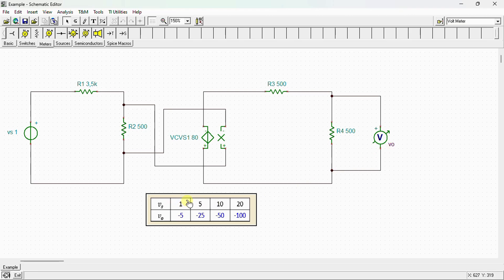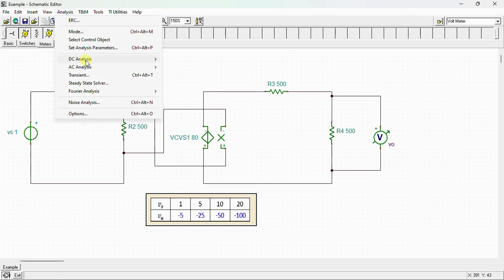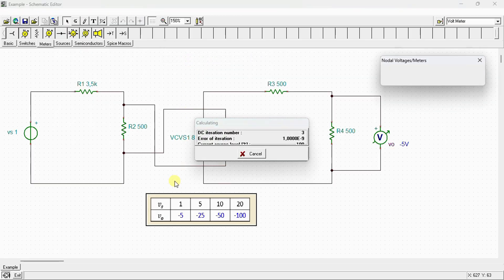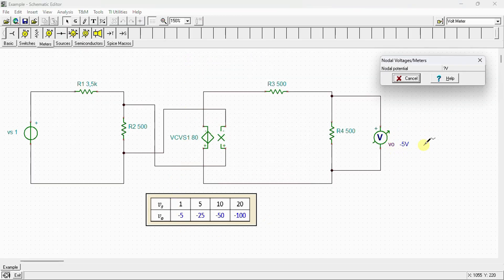Let's start first by applying 1 volt to vs. If we go to Analysis, DC Analysis, Calculate Nodal Voltage, we can see here that vo = -5V, which is exactly the same value we obtained by calculation.